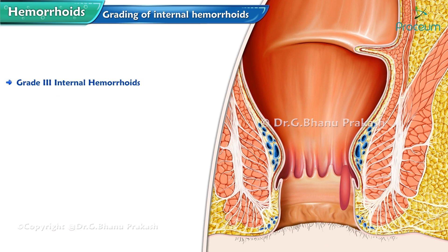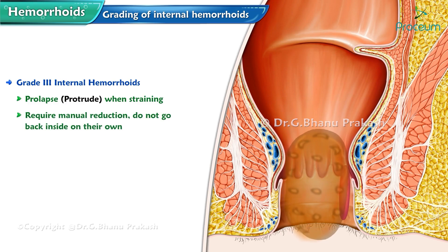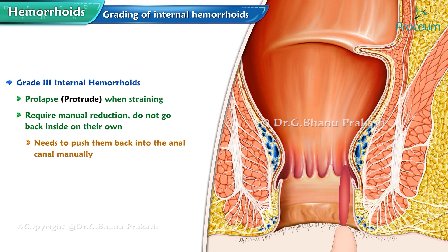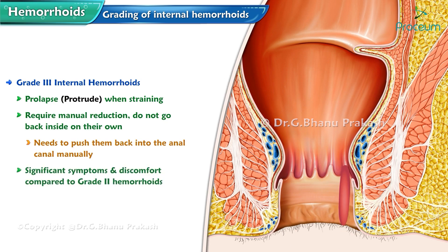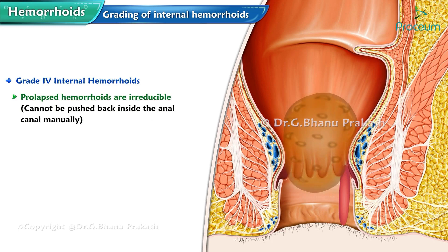Grade 3 internal hemorrhoids also prolapse when straining, similar to grade 2, but they require manual reduction — they don't go back inside on their own and the patient needs to push them back into the anal canal manually. Grade 3 hemorrhoids may cause more significant symptoms and discomfort compared to grade 2.